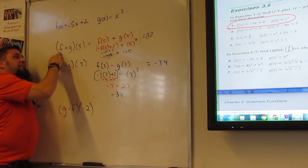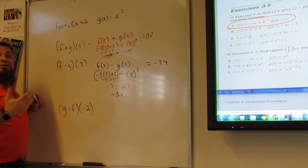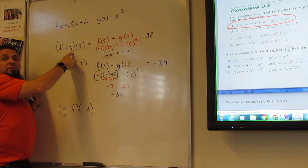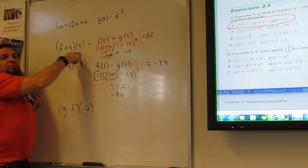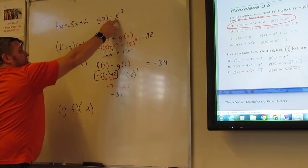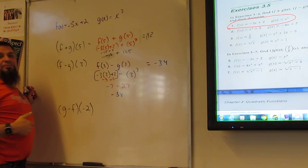and they have f plus g, we're taking the functions of f plus the function of g with respect to 5. So all I'm doing is plugging 5 into the function f, and I'm plugging 5 into the function g, and I'm adding those two functions.